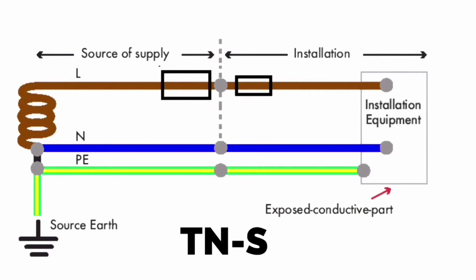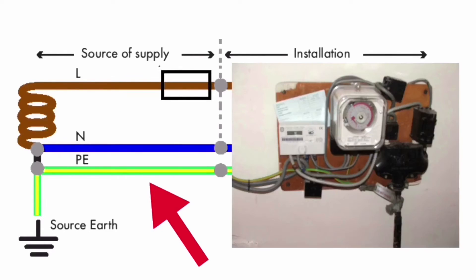The left hand side of this drawing shows the Supply Authorities Cable with a separate line conductor, a separate neutral conductor, and a separate protective earth conductor coming into our installation. This is the cable we can physically see in the bottom of the cutout.